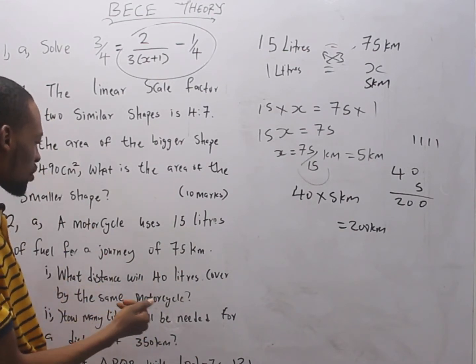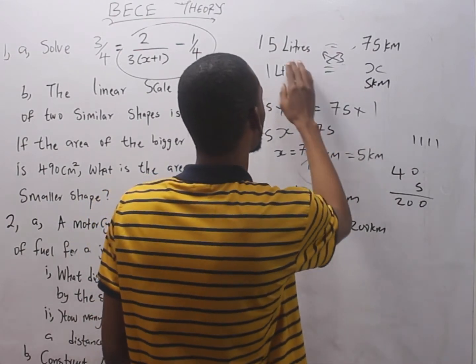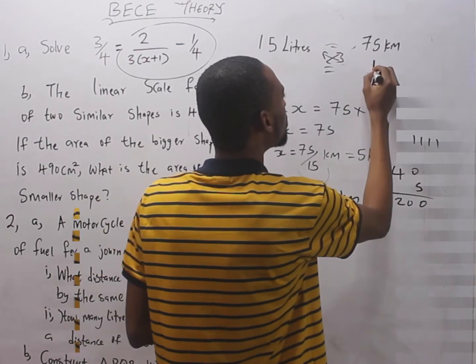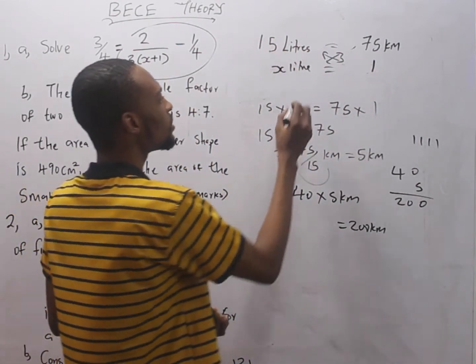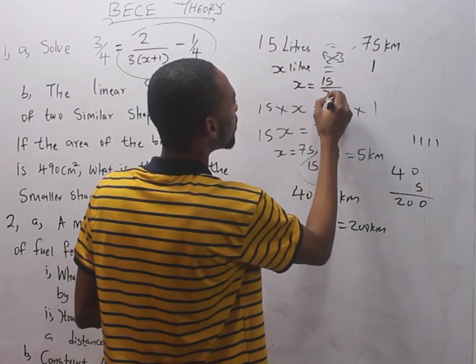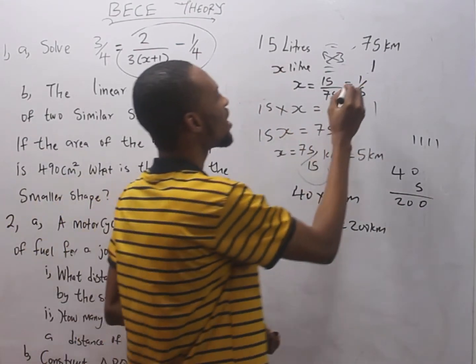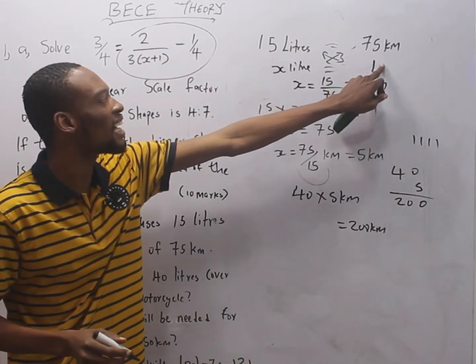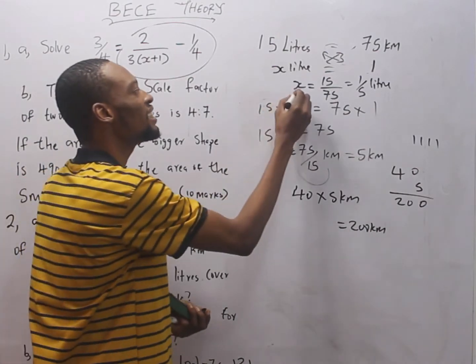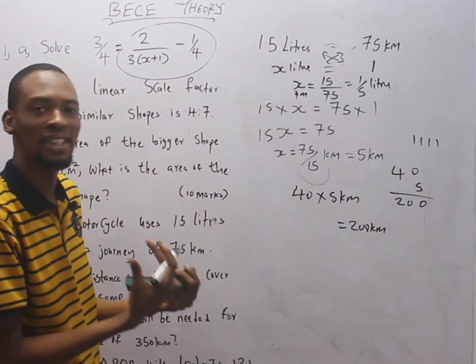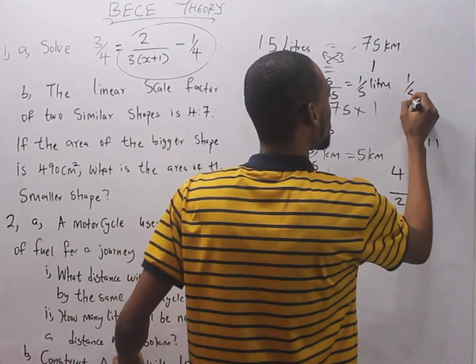The second one says, how many liters will be needed for a distance of 350 kilometers? If 15 liters takes 75 kilometers, 1 kilometer we need 1 over 5 liter. If 1 kilometer we need 1 over 5 liter, 350 kilometers we need 1 over 5 times 350. That gives us 70 liters.